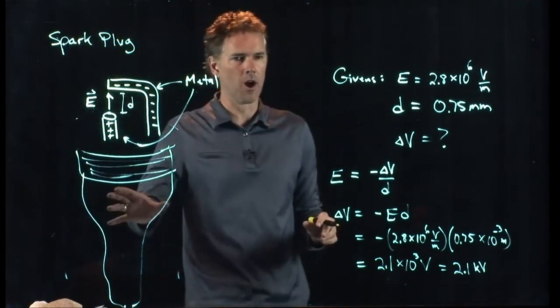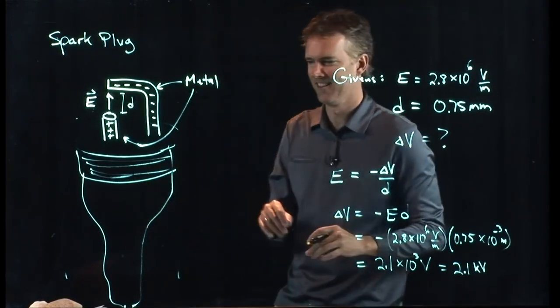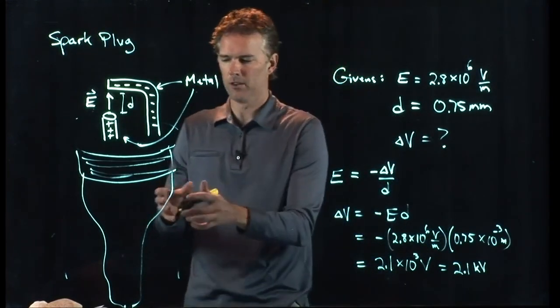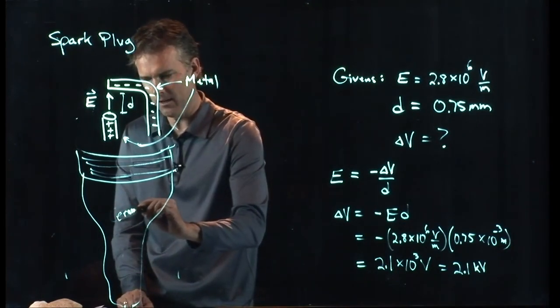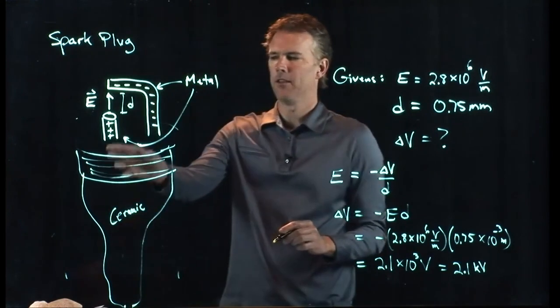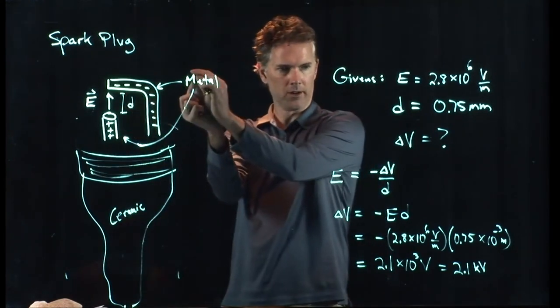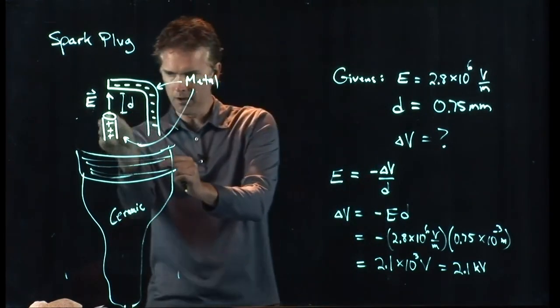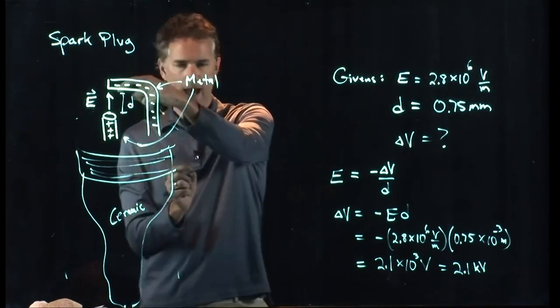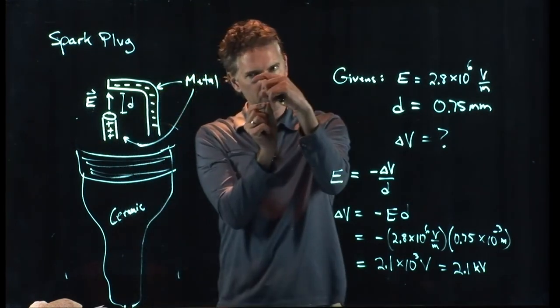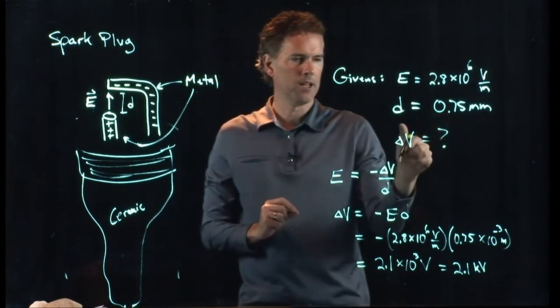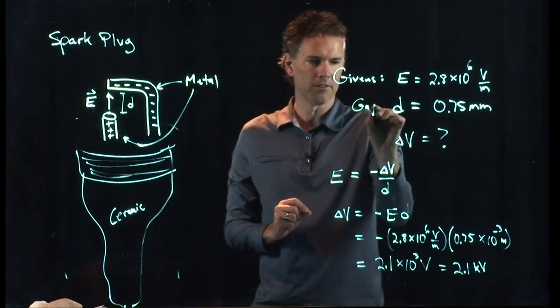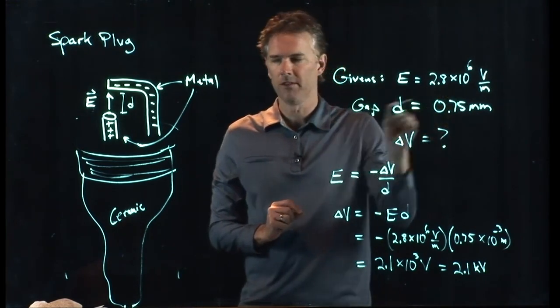It is a spark plug. Okay. It's not the best drawing. Maybe that's why you couldn't guess it. But this is a spark plug. This is the ceramic part of the spark plug. It's sort of a white material. And then it has these two electrodes that are coming out the end. There's a center cylinder. And then there's an outer sort of bent piece of metal that comes up like that. And there's a very small gap. Right? This is the gap distance, D, which is 0.75 millimeters.